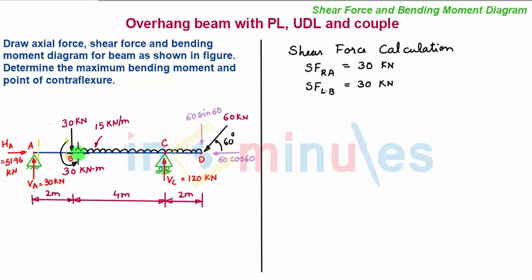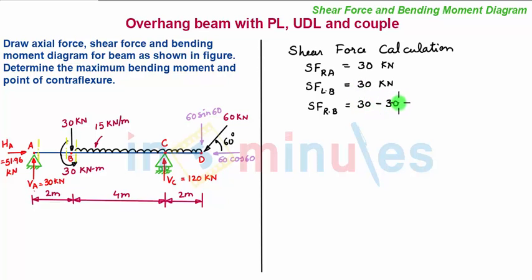Now we move the section beyond point B by taking a section towards the right of B and very near to it. The shear force towards the right of B: the only force addition when we move the section is this downward force of 30 kN. A downward force on the left-hand side of the section is negative, so we have 30 minus 30 kN, which equals zero.